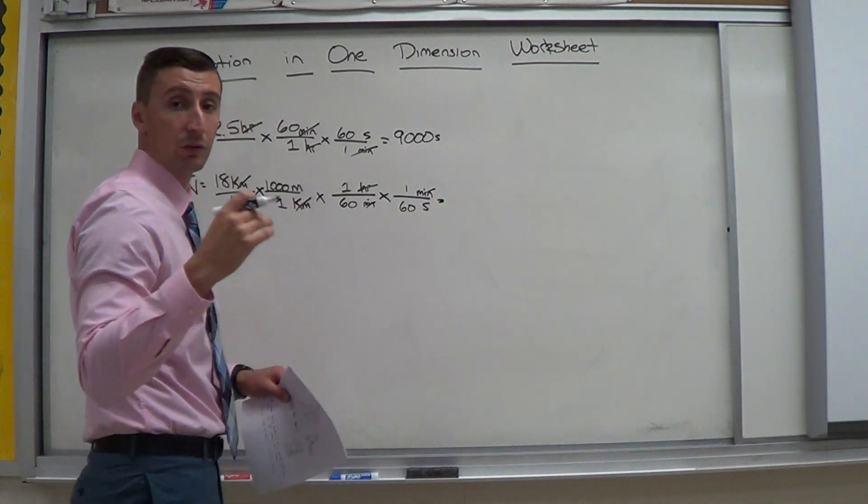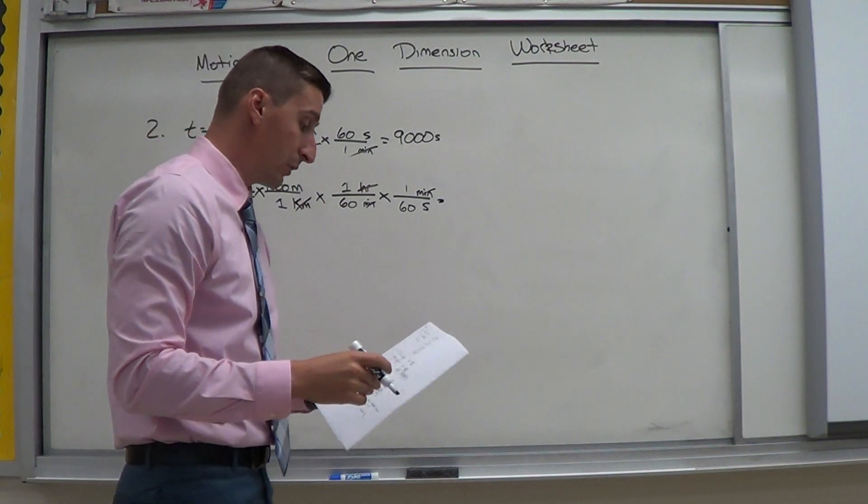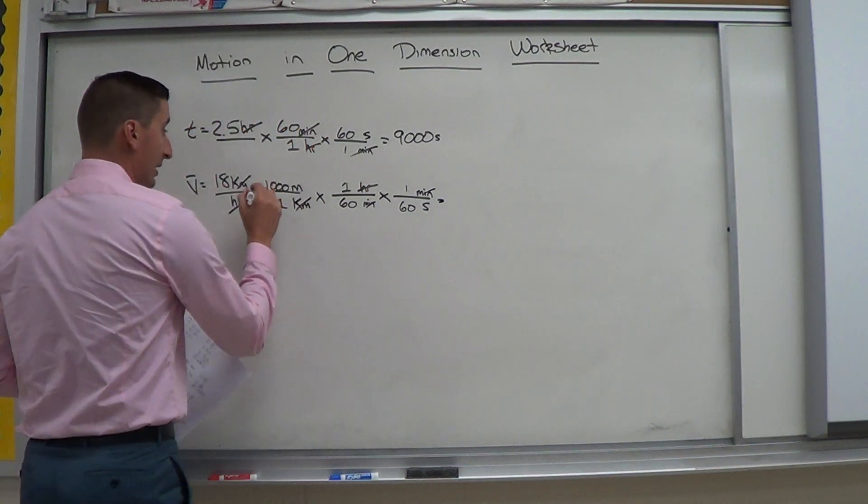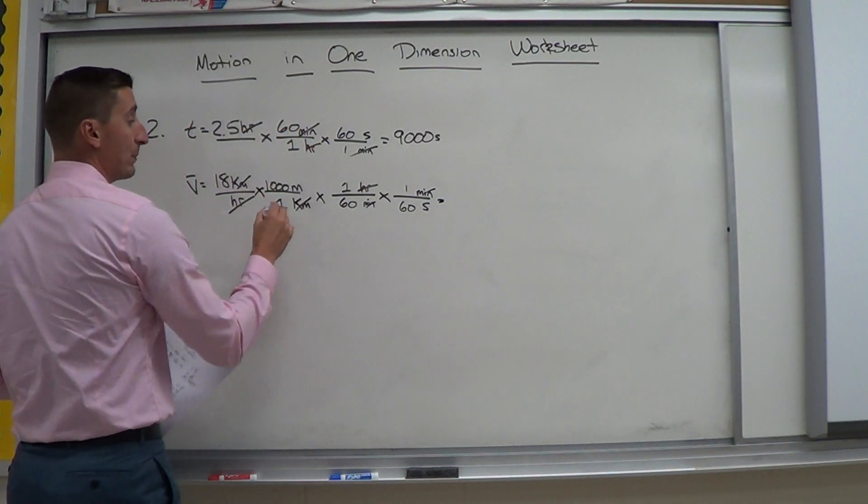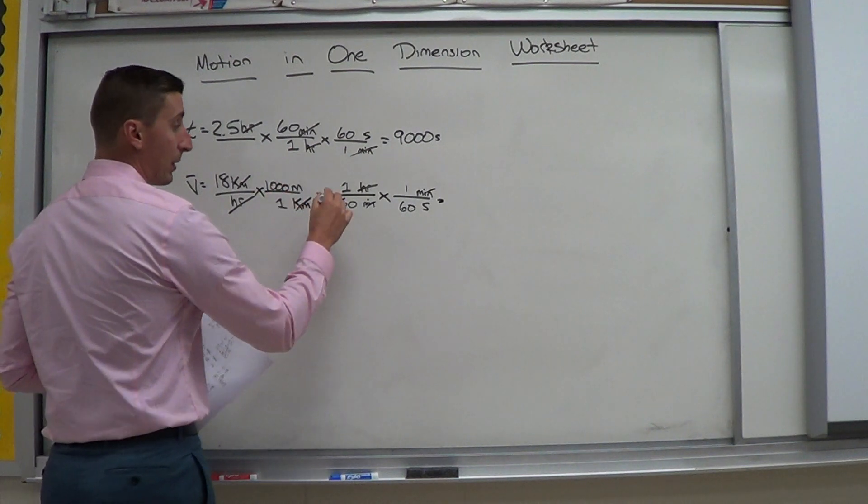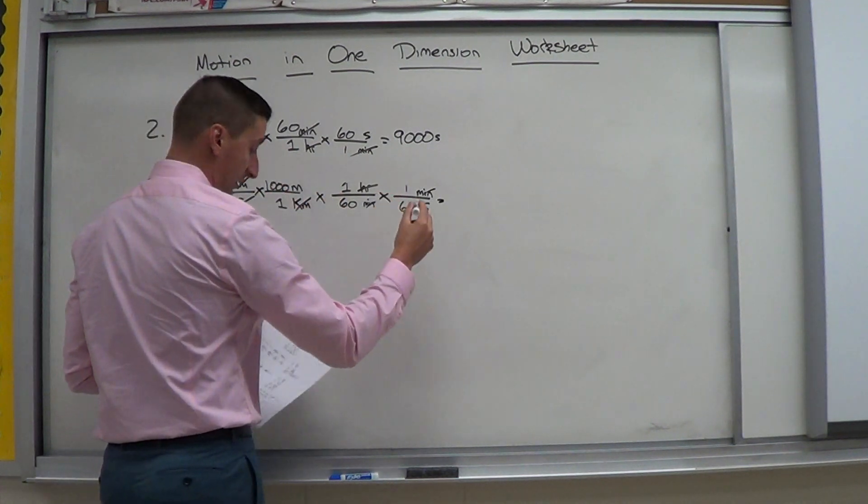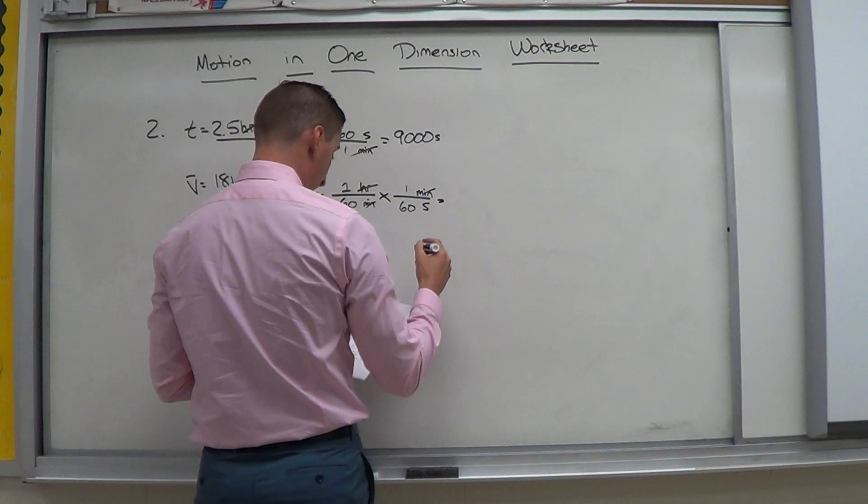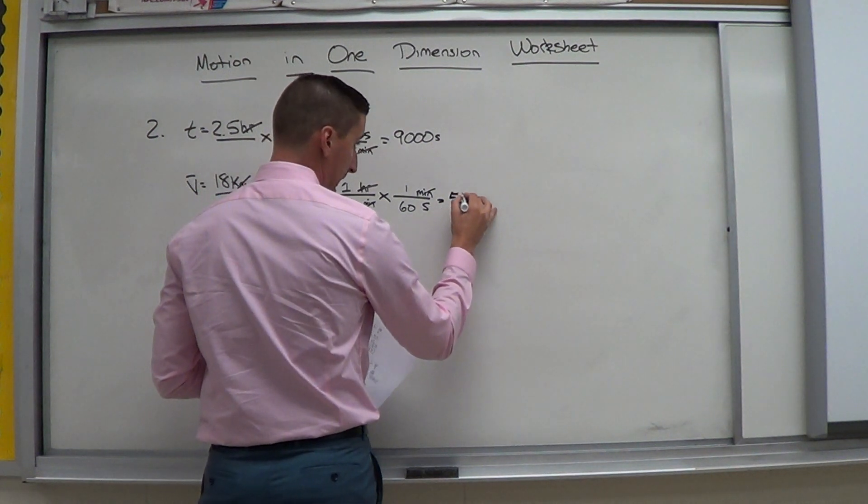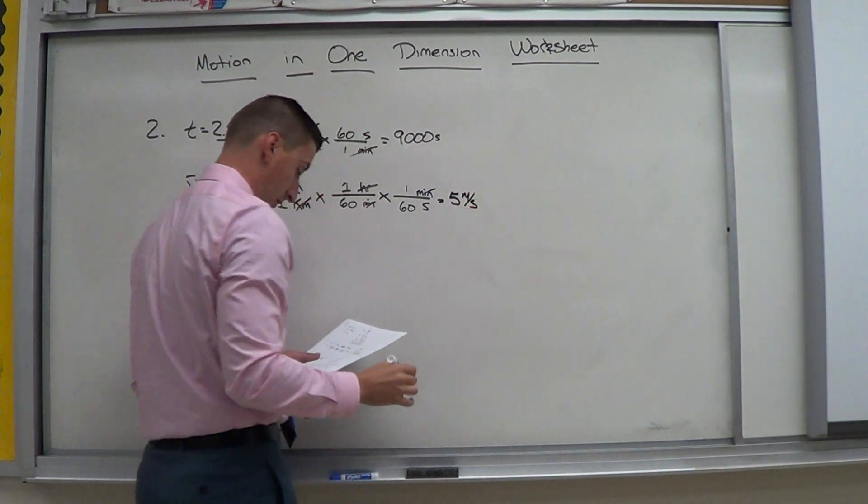I'm left with meters per second. In other words, my base unit for velocity. So once I do that, I multiply anything on the top. So I do 18 times 1,000 divided by 60 divided by 60, which gives me 5 meters per second.